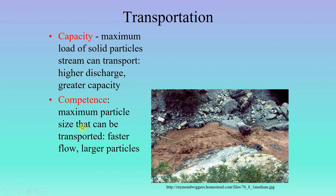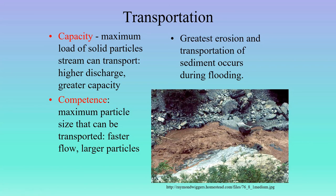The Mississippi River, on the other hand, has a huge capacity — a huge volume — though it's moving more sand, silts, and clays, so it doesn't have as high competence. That little mountain stream has higher competence than the Mississippi River, but far less capacity. If you added up the whole weight and volume of everything being carried, the Mississippi River is definitely transporting a lot more material. It's also important to note that for any given stream, the greatest amount of erosion and transportation — the greatest capacity and competence — all occur during flooding times.